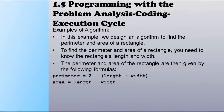Let us see the examples of an algorithm. In this first example, we design an algorithm to find the perimeter and area of a rectangle. To find the perimeter and area, you first need to know the rectangle's length and width. The perimeter and area are given by the following formulas: Perimeter = 2 × (Length + Width), and Area = Length × Width.